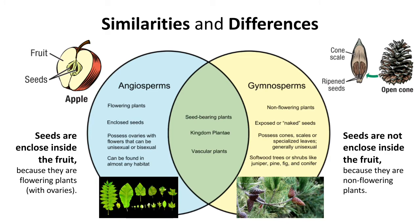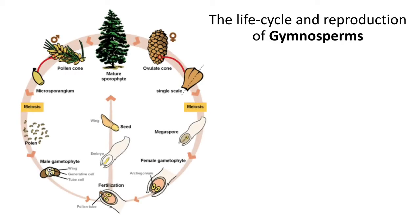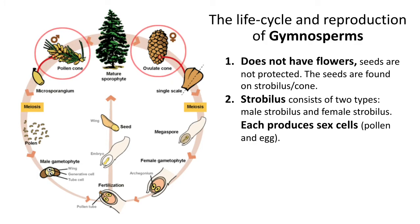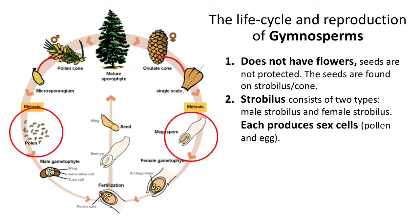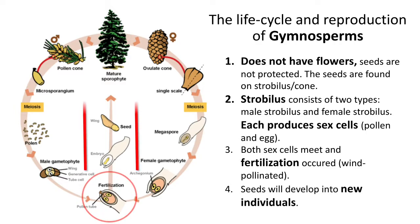Now let's talk about the life cycle and reproduction of gymnosperms. Gymnosperms do not have flowers and seeds are not protected — the seeds are found on a strobilus or cone. The strobilus consists of two types: male strobilus and female strobilus. Each produces sex cells — pollen and egg. Both sex cells meet, fertilization occurs, and finally the seeds develop into a new individual.